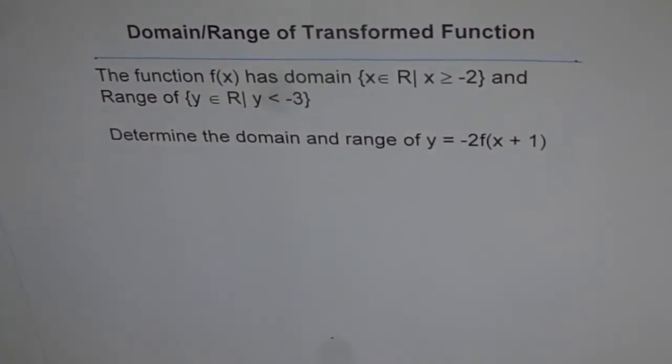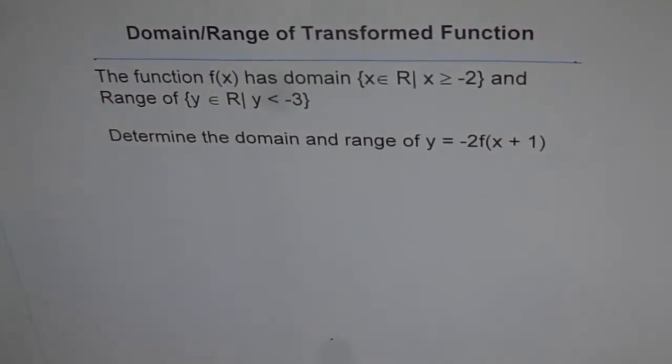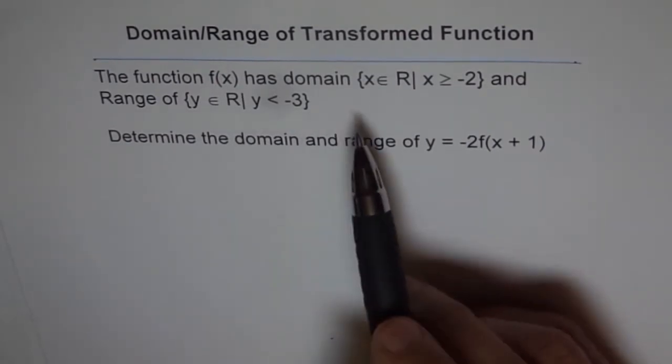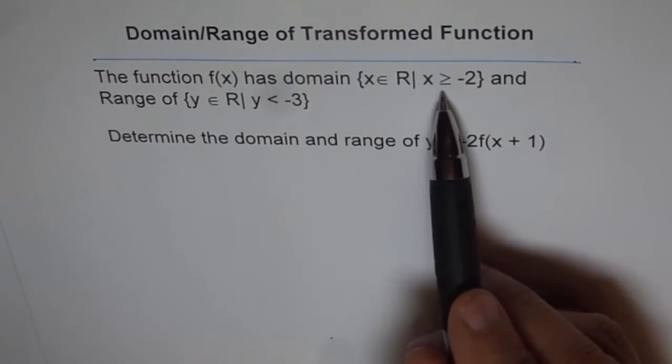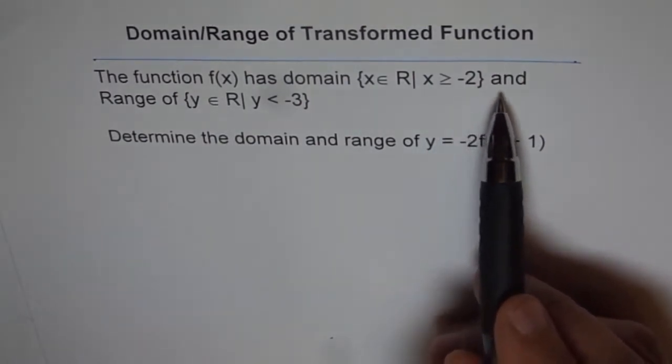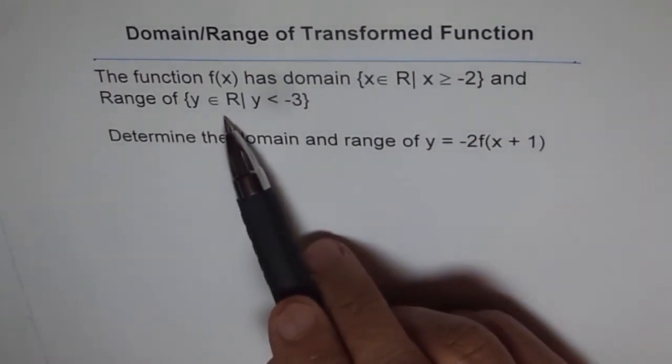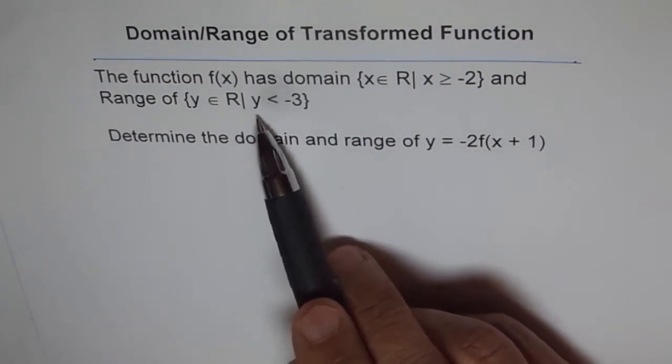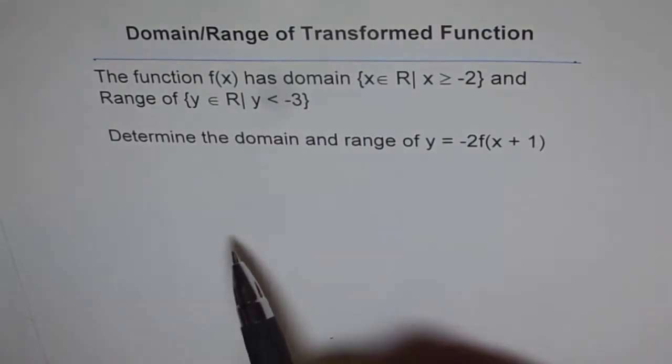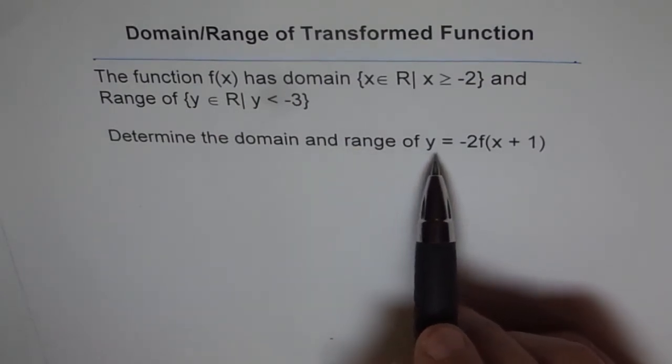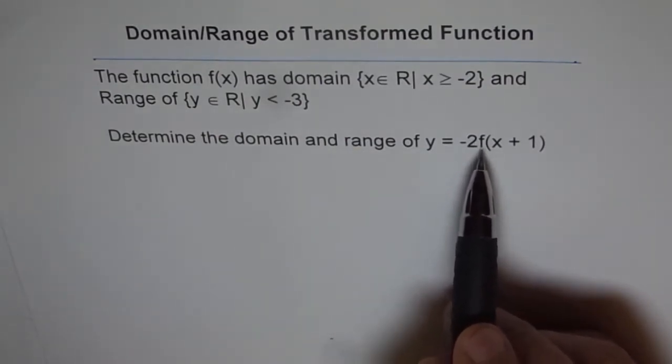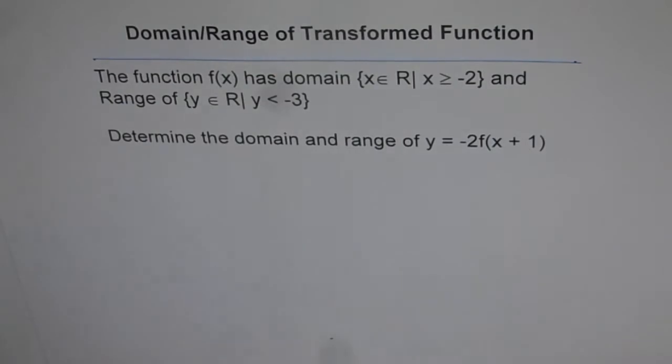The function f(x) has domain x ∈ ℝ where x ≥ -2 and range y ∈ ℝ where y < -3. Determine the domain and range of y = -2f(x + 1).